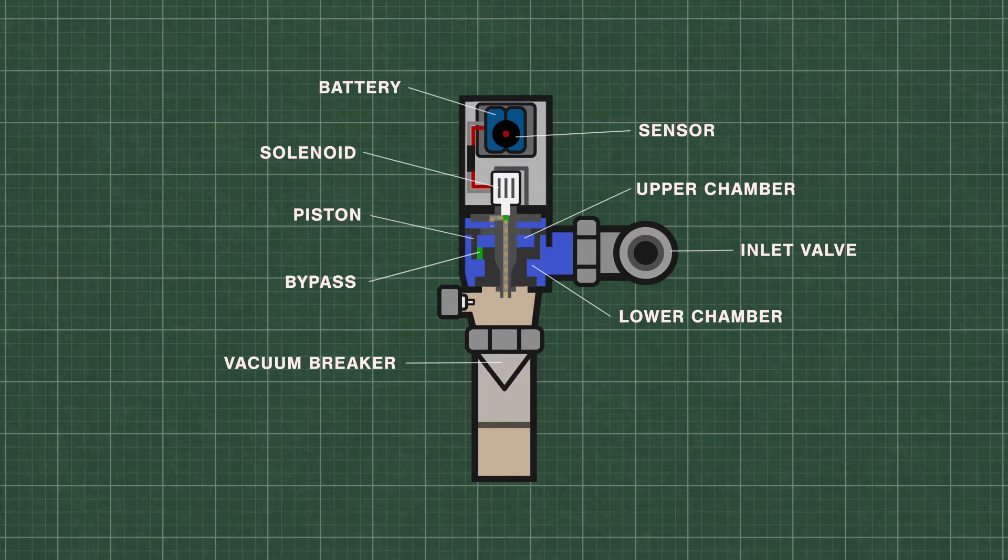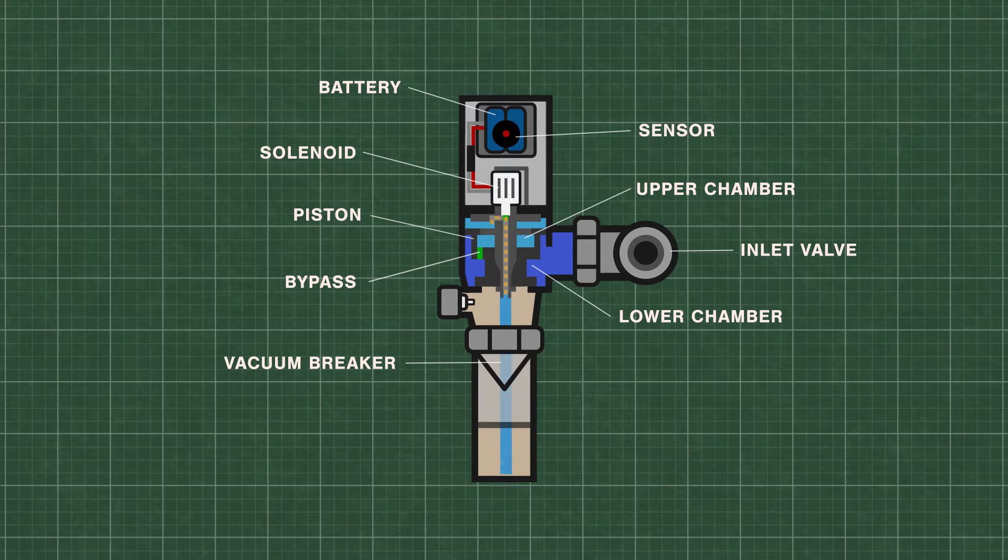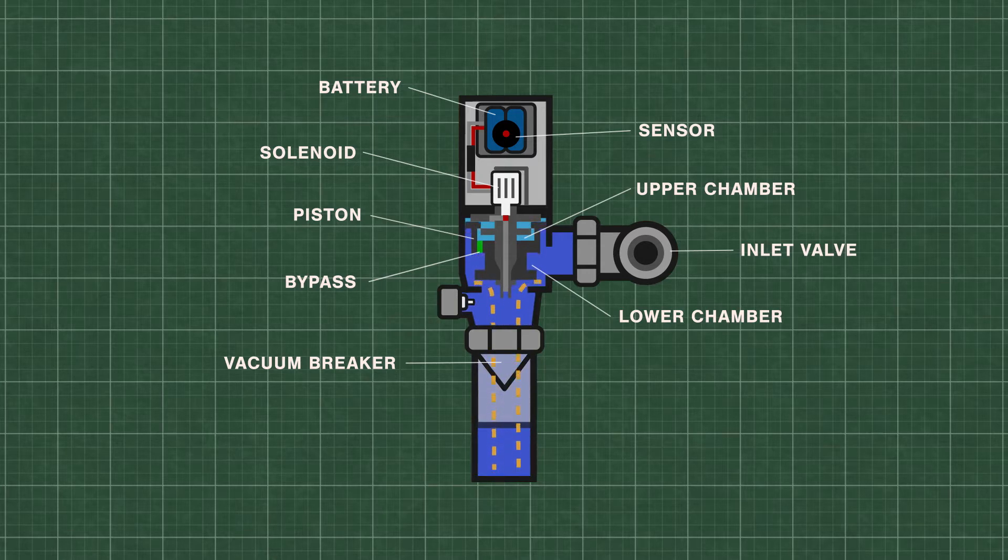When the sensor is triggered, the solenoid activates and releases water from the upper chamber which decreases the pressure. High pressure water from the inlet now lifts the piston up and travels down the flush pipe.